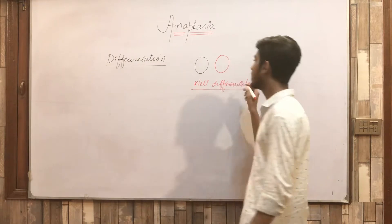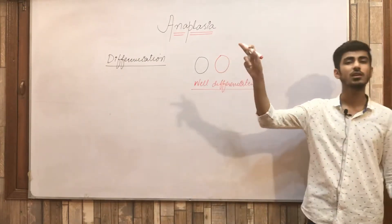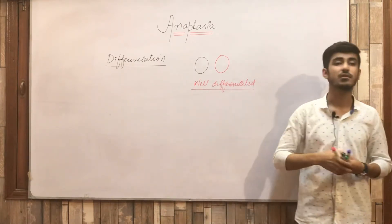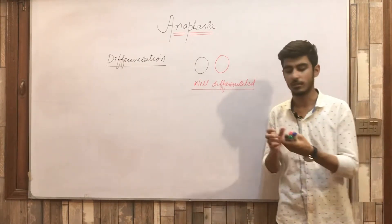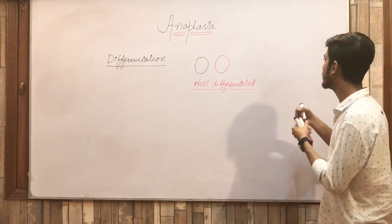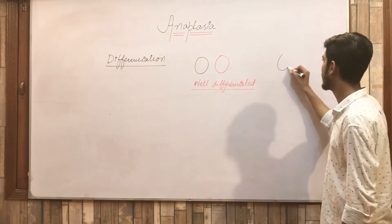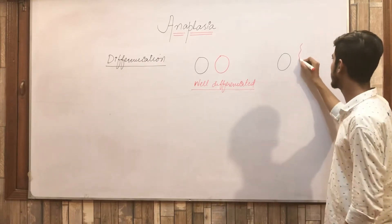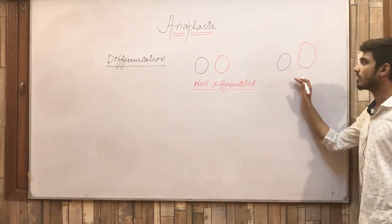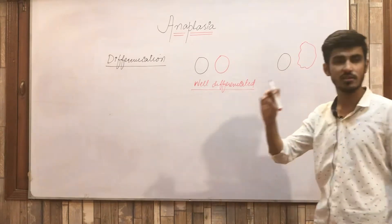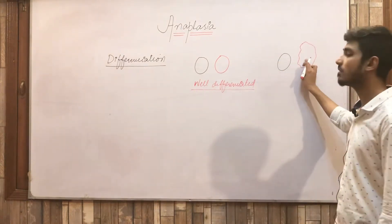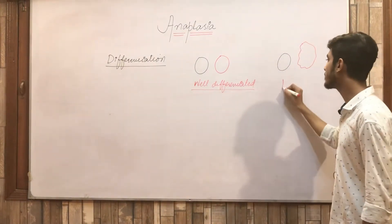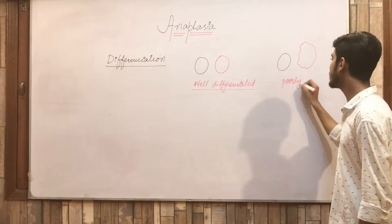Well differentiated means the tumor cell resembles the normal cell very much — both functionally and morphologically. Now suppose we have a normal cell and a tumor cell where the size is not the same, the shape is not the same, and the function is also not the same. So they are not well differentiated — they are poorly differentiated.